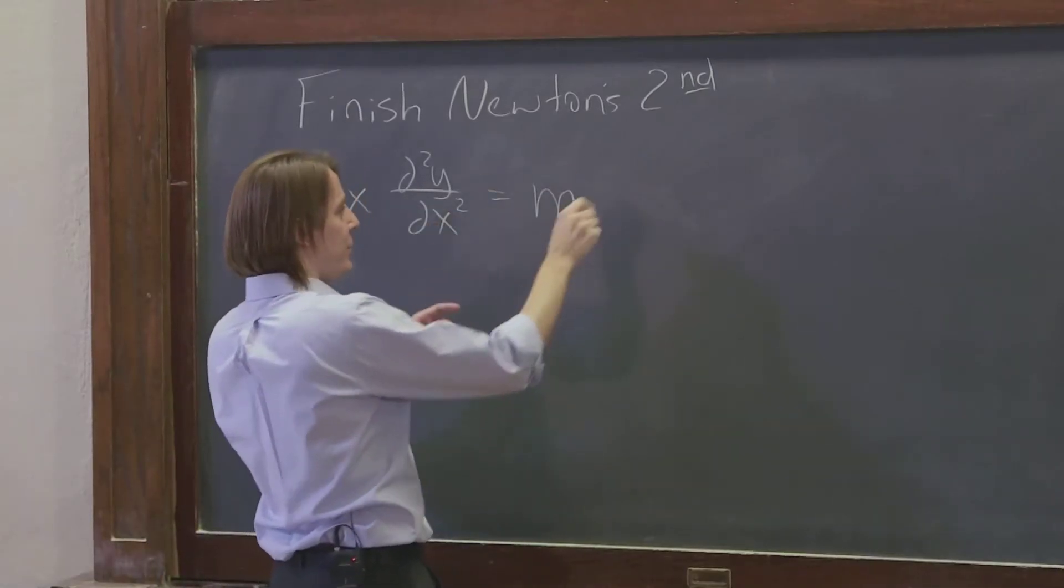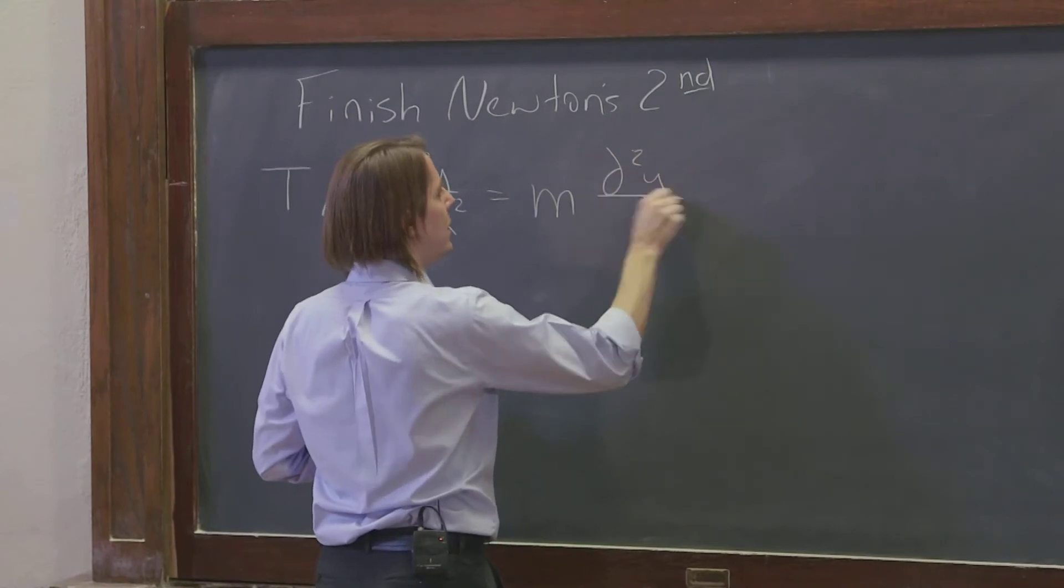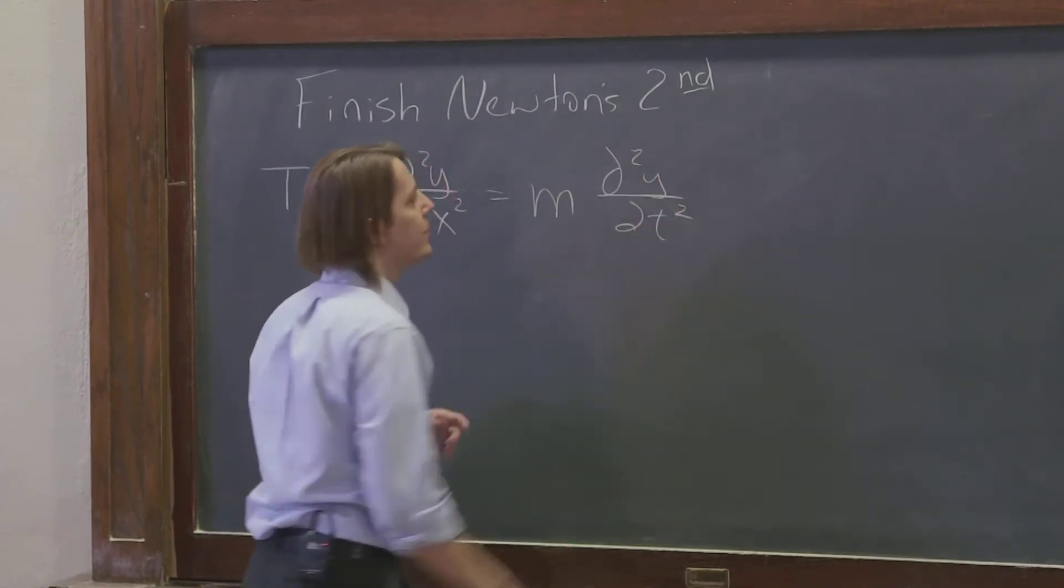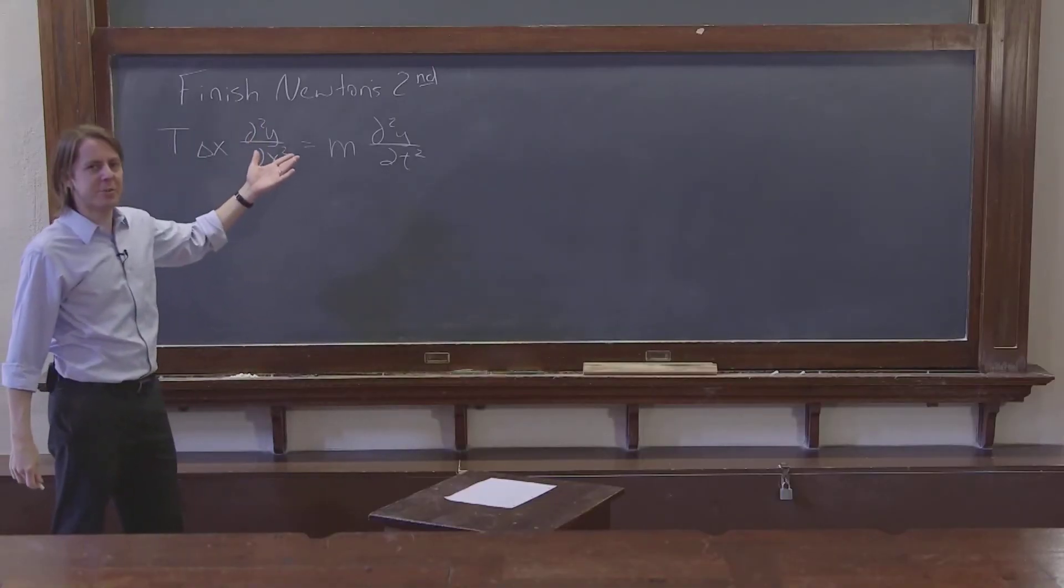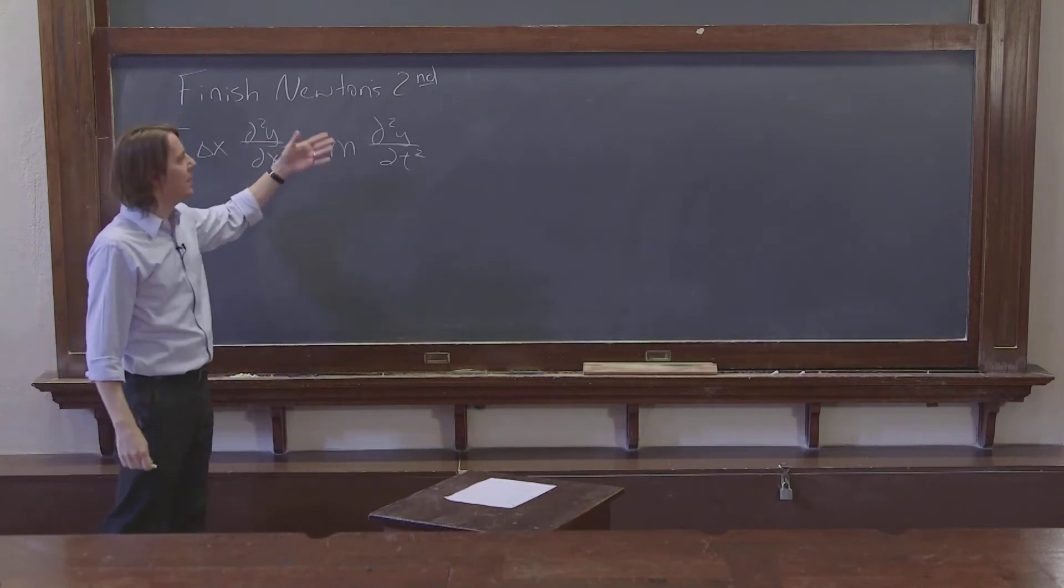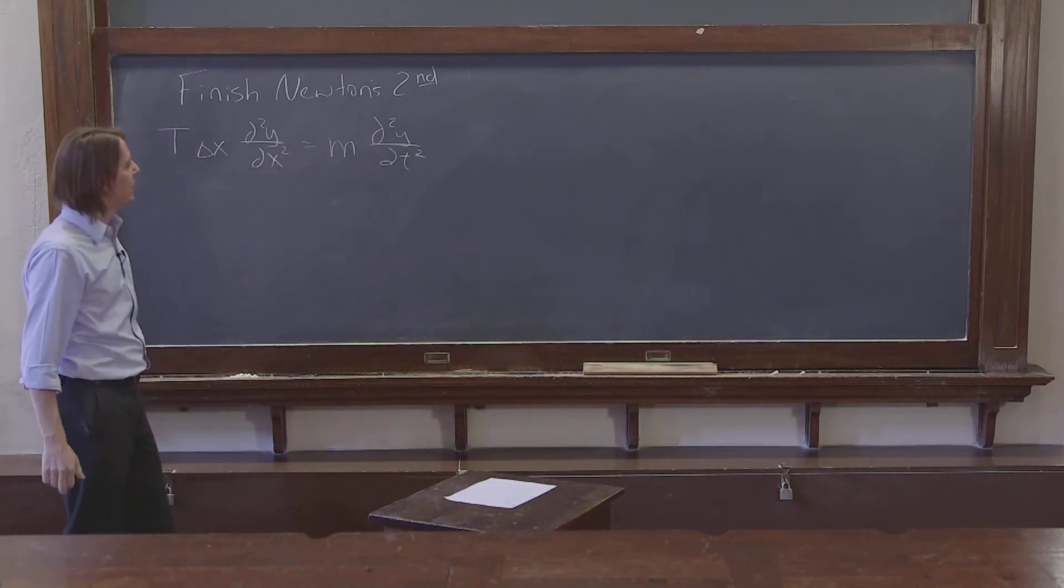The acceleration of that little piece of string is really just d²y/dt². So y is a function of time, it's a position, dy/dt is the velocity, second derivative d²y/dt² is the acceleration.